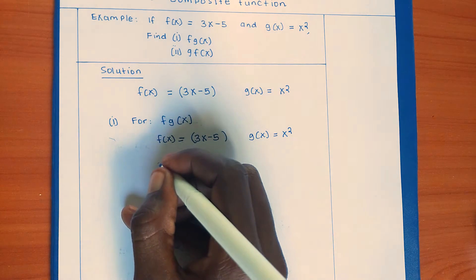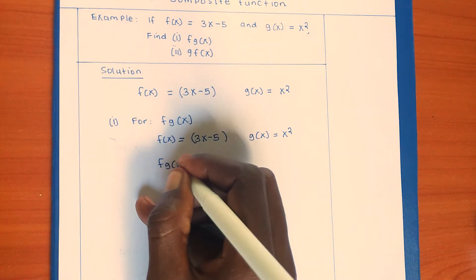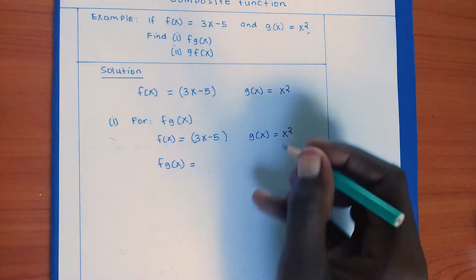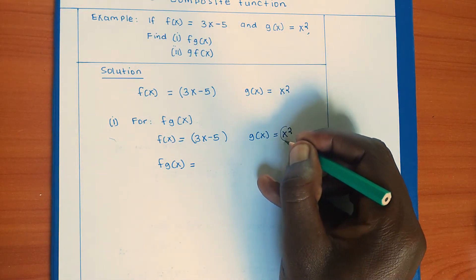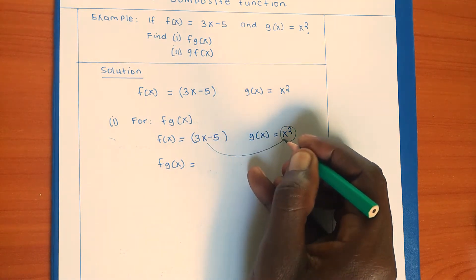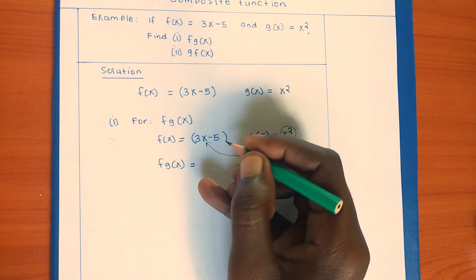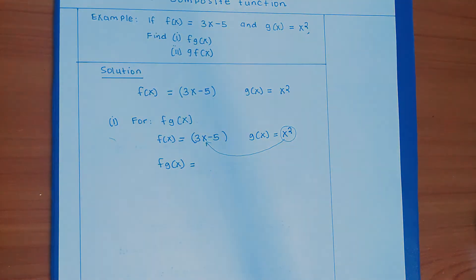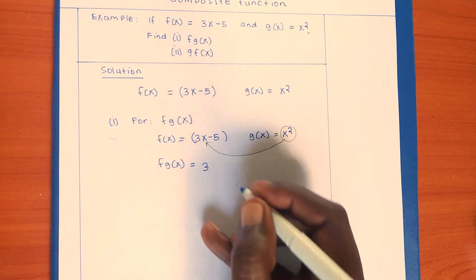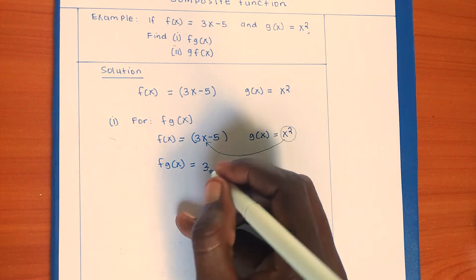If you want to calculate fg(x), this is what will happen: you get the value of g(x), g(x) will migrate and replace x in f(x). So we shall have 3 times the value of g(x), which is x².